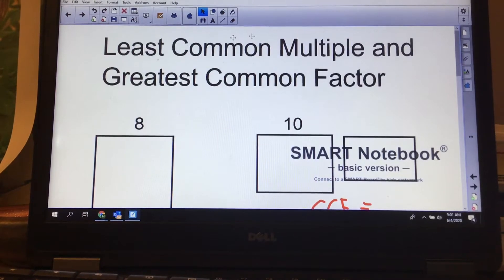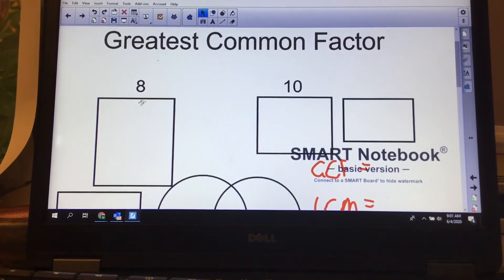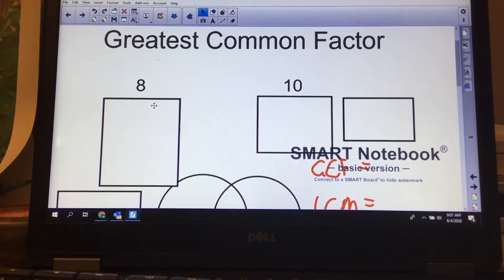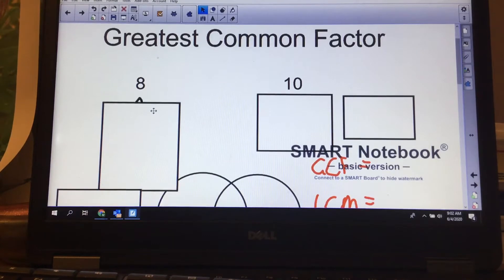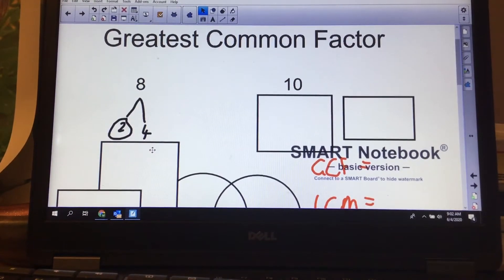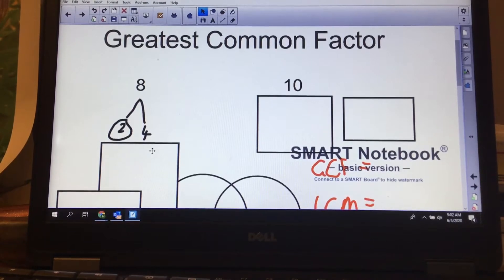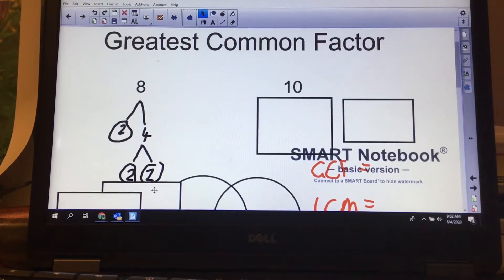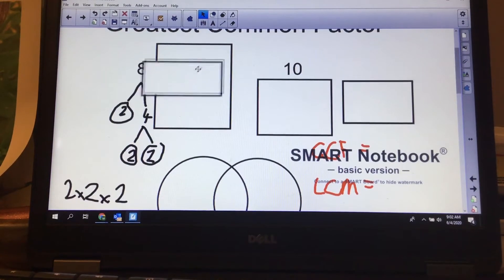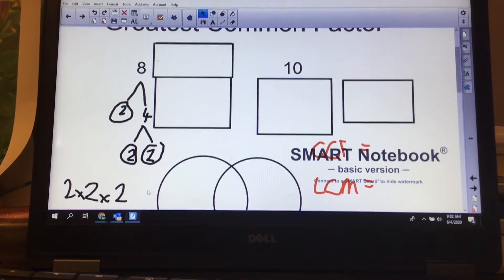If we're looking for the least common multiple and greatest common factor of 8 and 10, I'm going to do my prime factorization of the number 8 first. It's even, I divide by 2. I'd have 4 left over. That's also even, so I divide it by 2 again and I get 2. So my prime factorization for 8 is 2 times 2 times 2.